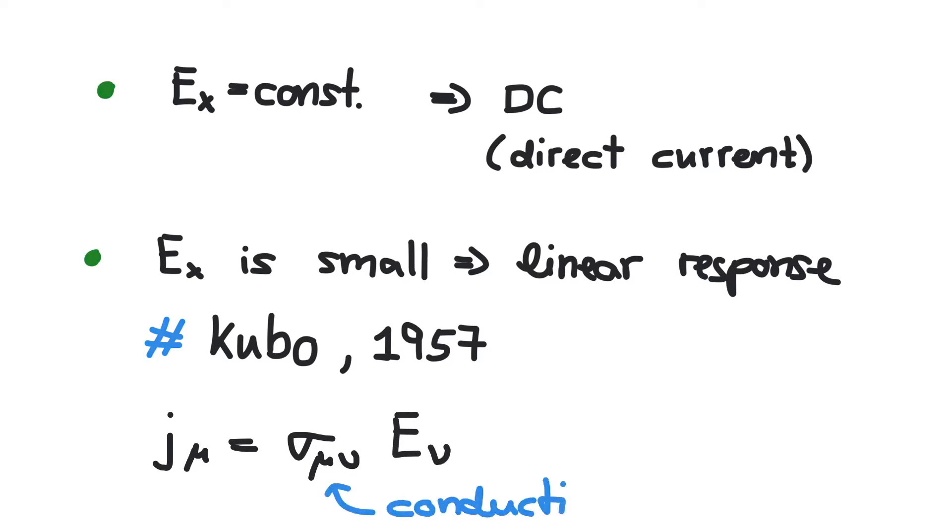The proportionality factor is called conductivity tensor, where mu and nu can in principle take on all directions x, y and z.